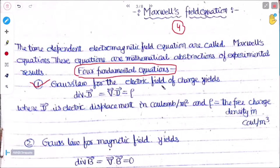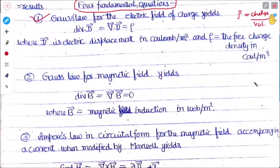Gauss's law for the electrostatic field states that the divergence of D is equal to rho (ρ), where D is the electric displacement vector and rho is the free charge density — that is, charge per unit volume. The second equation is Gauss's law for the magnetic field: divergence of B is equal to zero.